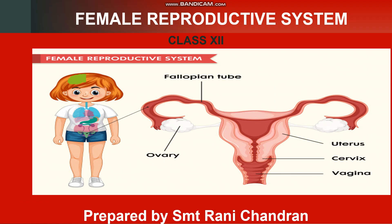Hi students of class 12, welcome to this session. Last class, you learned about the male reproductive system, spermatogenesis — that is, the formation of the male gamete — and the structure of the mammalian sperm. Today, you will be learning about the female reproductive system, oogenesis — that is, the formation of the female gamete — and the structure of the ovum.